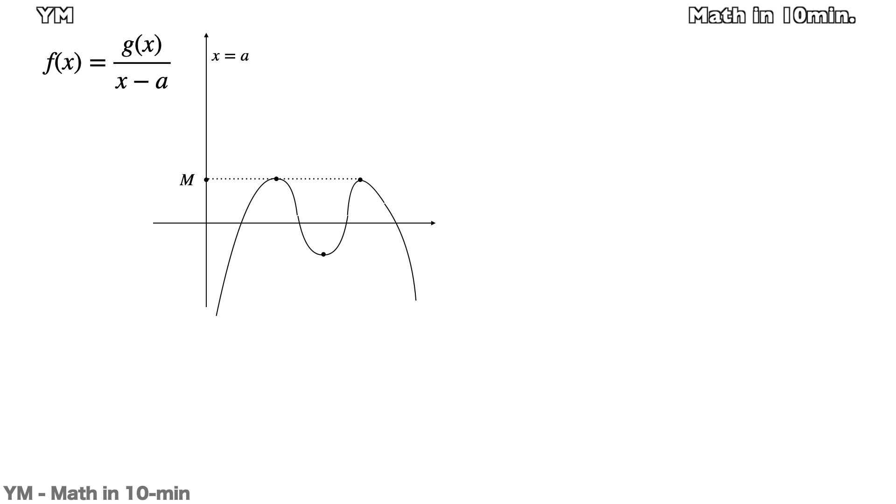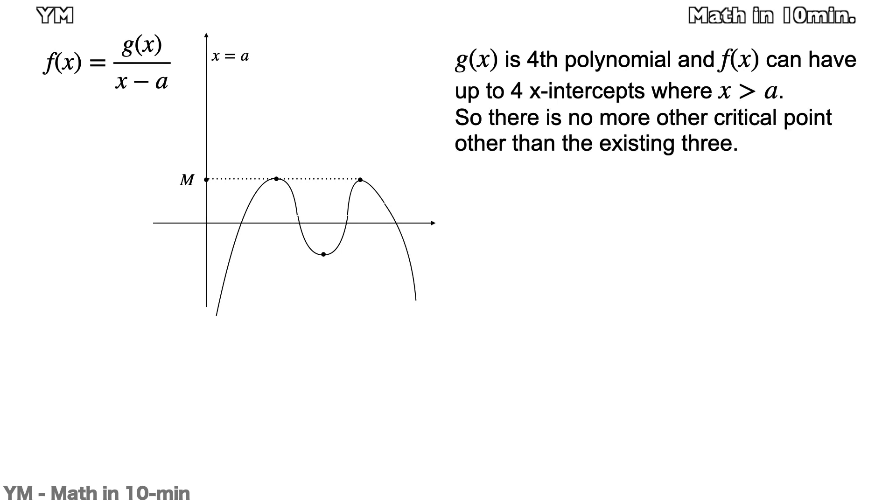This is a possible case of f(x). As f(x) is continuous for any x greater than a, there must be a local minimum between the two local maximum points. And since g(x) is a fourth-degree polynomial and f(x) is a form which can have up to four x-intercepts where x is greater than a, there must be no more critical points other than those three.